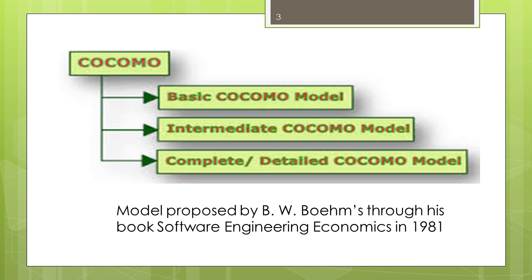COCOMO includes a basic model, intermediate model, and complete model. The basic model aims at estimating in a quick and rough fashion most small to medium sizes of software projects. Because the basic model is limited in accuracy, the intermediate model was introduced. Boehm introduced an additional set of 15 cost drivers to increase the accuracy of estimation in this intermediate model. The detailed model provides a set of phase-sensitive effort multipliers for each cost driver, which helps in determining the manpower allocation for each phase of the project.